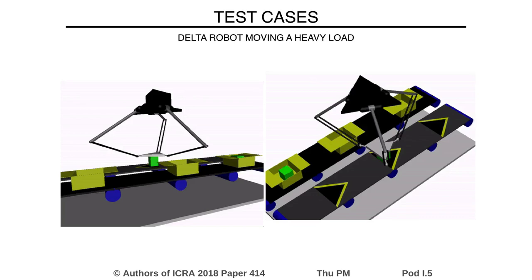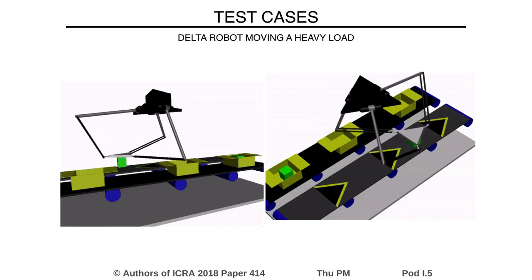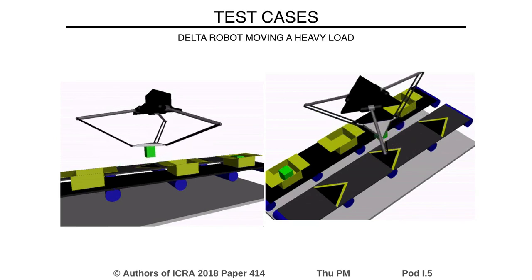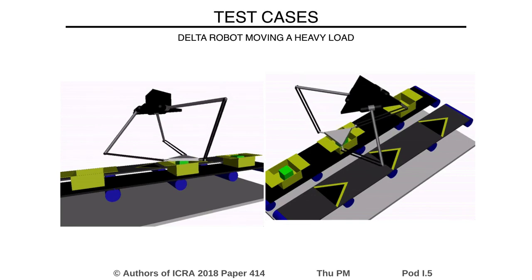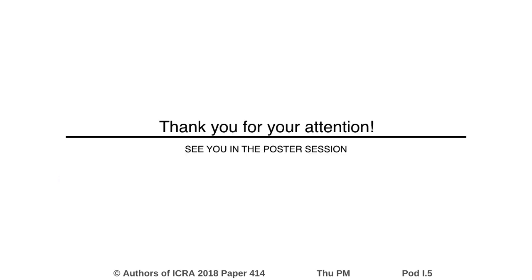The planner can also deal with more complex robots. We show results on a delta robot performing a pick-and-place task with a heavy load. The problem involves a six-dimensional state space and 30 state coordinates. Thank you for your attention.